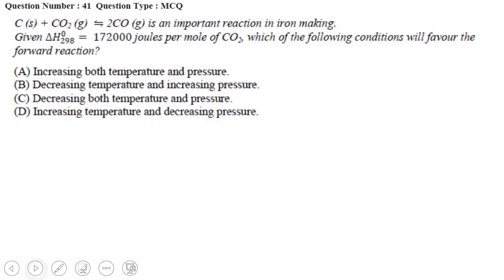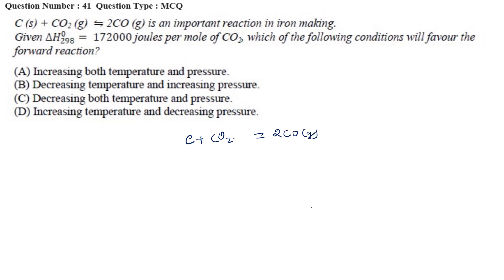These are two-mark questions. First question: C(s) + CO2(g) → 2CO(g) is an important reaction in iron making. Given ΔH⁰₂₉₈ = 172,000 J/mol of CO2. Which of the following conditions will favor the forward reaction? The reaction involves solid carbon and gaseous CO2 as reactants, and gaseous CO as product.